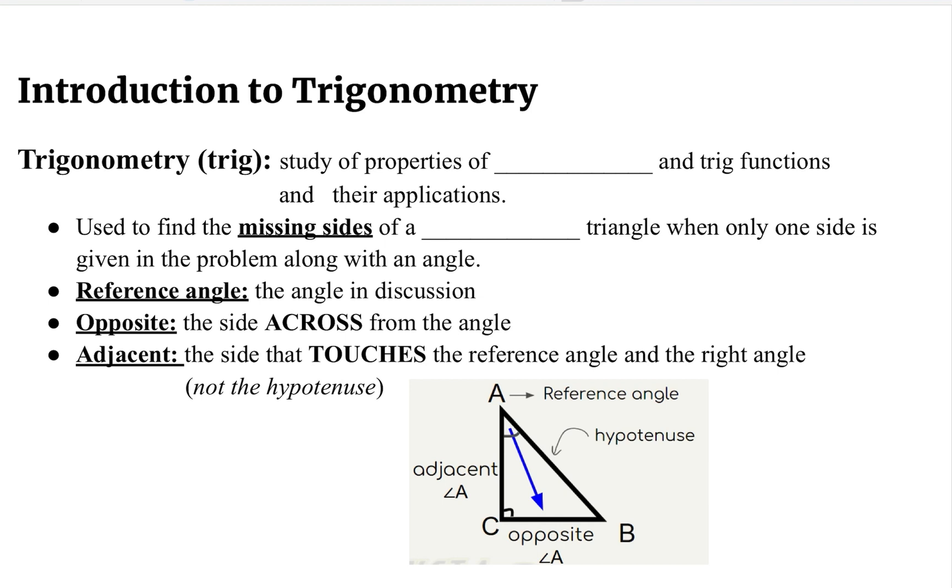Trigonometry is the study of properties of triangles and trig functions and their applications. Trig is used to find the missing side of a right triangle when only one side is given in the problem along with an angle. So one side and an angle is given.